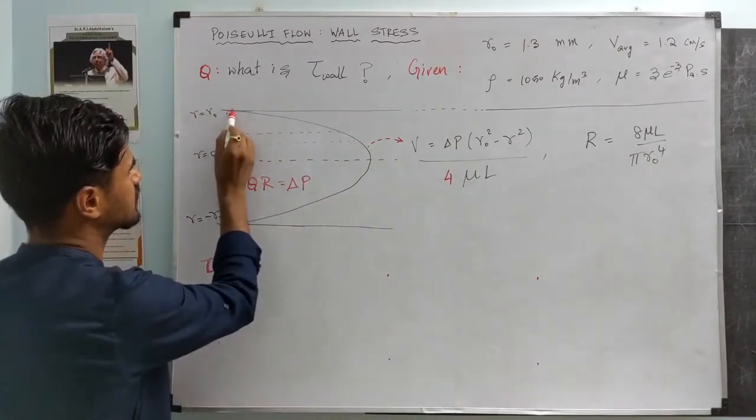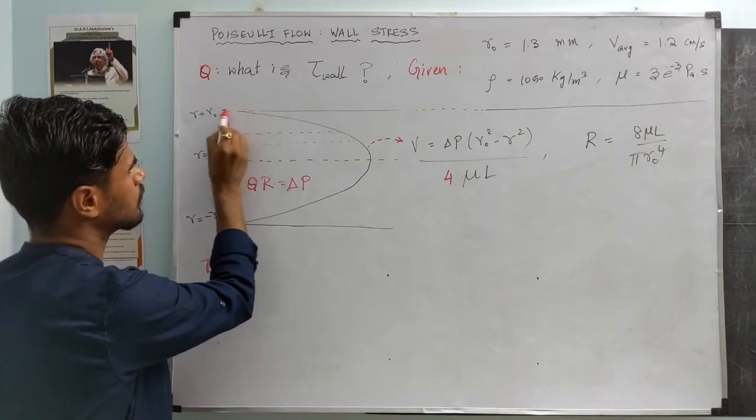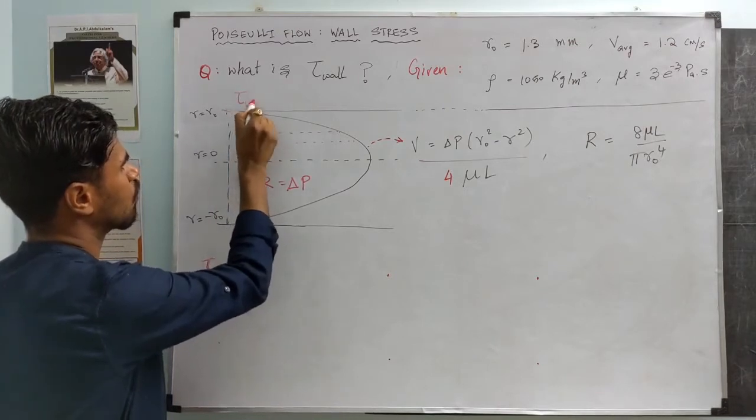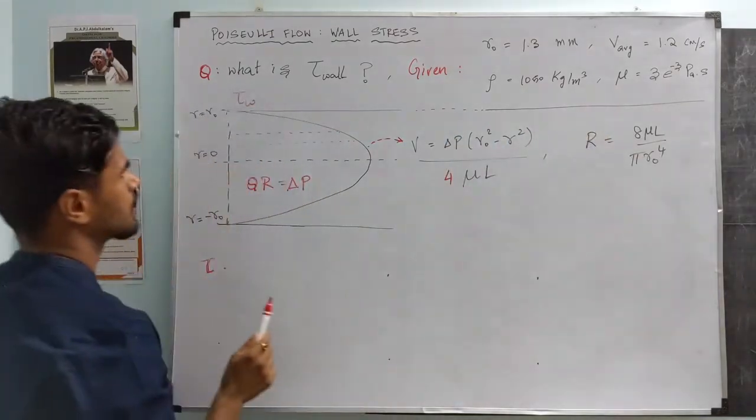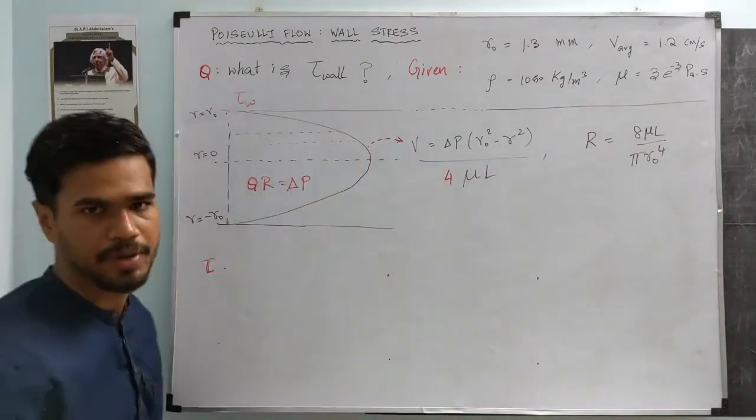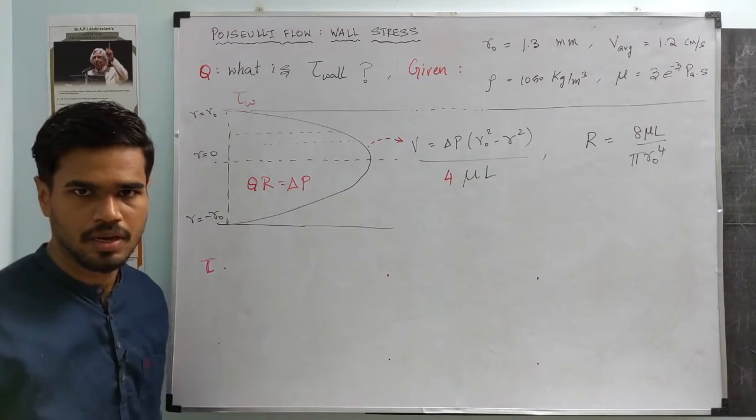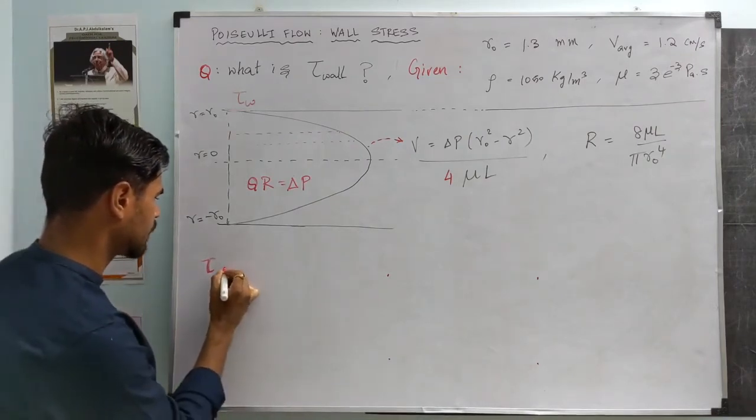What we want in this question is: what is that shear stress at the walls of the vessel? What is τ_wall? We are given this information and this is what we need to find.